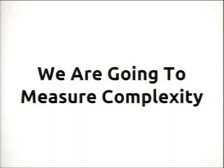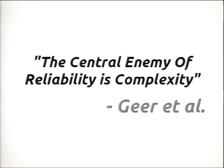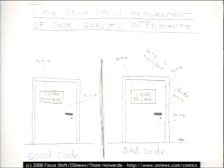So what we're really going to measure today is complexity. Why do we care about complexity? There's a quote I love: 'The central enemy of reliability is complexity.' The more complex a piece of software is, the harder it's going to be to maintain, the more likely you're going to have bugs in it, the harder it's going to be to add new features, and you're going to grind down into technical debt. The less complex, the higher the quality. The only definitive measure is hard to pin down, but we want to use some kind of scientific method.